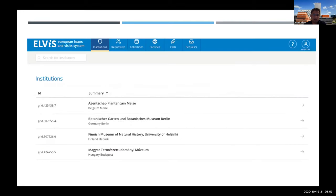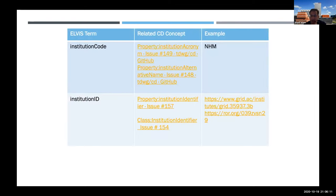A screenshot shows the current portal used in ELVIS — at the moment only the virtual access component is working and they don't have the collections data yet. They're using the GRID identifier to identify institutions. For mapping, they want to tie acronyms used for institutions and collections to a persistent machine-actionable institution ID — either GRID or ROR. The CD concept has elements for all of these things. And with that, the two-minute warning has arrived.